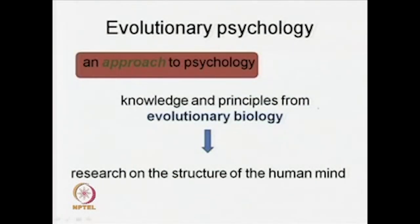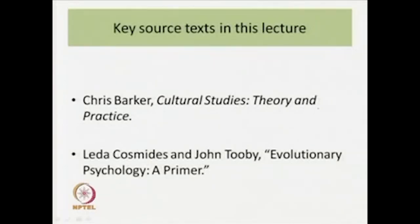Therefore, we called evolutionary psychology, after the scholars Tooby and Cosmides, an approach to psychology — not really a branch of psychology, but an approach to psychology — where knowledge and principles from evolutionary biology are gleaned or borrowed for research on the structure of the human mind. Evolutionary biology was the main domain from which evolutionary psychology draws its inspiration, in order to give us information and knowledge about how the human mind originated and developed over evolutionary time.